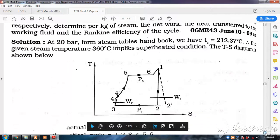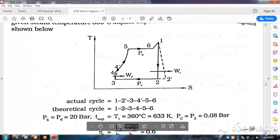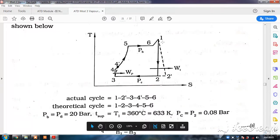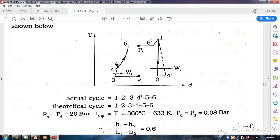So the T-S diagram is drawn for the superheated condition: 1, 2, 3, 4, 5, 6. This is the theoretical cycle.